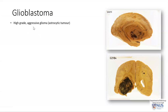Glioblastomas are high-grade aggressive gliomas. Gliomas are the biggest group of primary tumors in the brain and they have three subtypes: astrocytic tumors, ependymal tumors, and oligodendrocytic tumors.